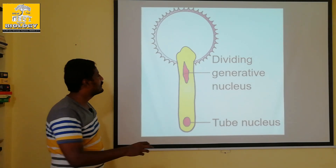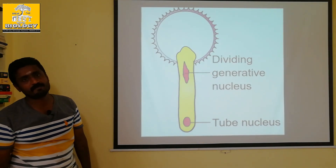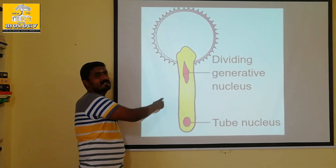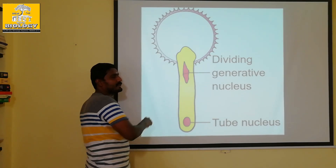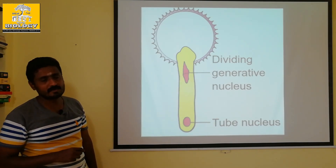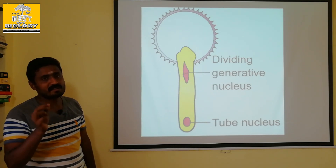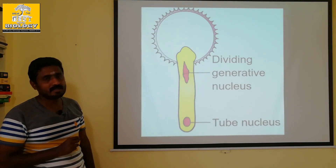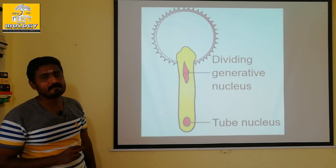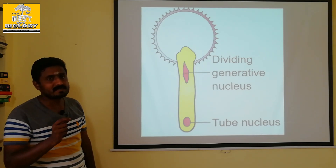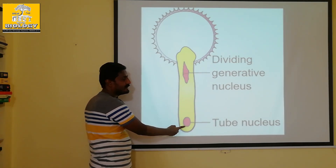We introduce a tube nucleus on the tube. That is the fourth step. The stigma receives the pollen grains. Moisture forms the tube — that is called the pollen tube. The vegetative nucleus is first to go, then the generative nucleus will go.